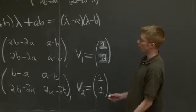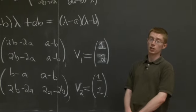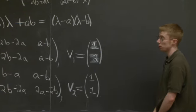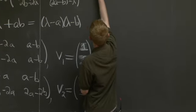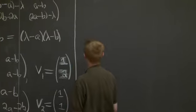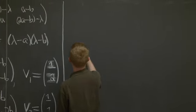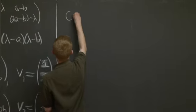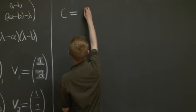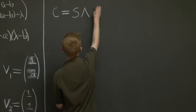Great. Now we have our eigenvalues and our eigenvectors. So now we can write C in a nice, easy way that allows us to take powers of it. So what's that way? OK, so that's C equals S lambda S inverse.